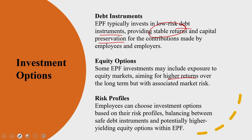Employees can choose investment options based on their risk profiles, balancing between safe debt instruments and potentially higher-yielding equity options within the EPF. These include debt instruments in the form of FDs, government bonds, and debentures, or equity options which may be individual stocks, mutual funds, or even ETFs — exchange traded funds — that track a specific index or sector, providing a diversified portfolio with potentially lower fees compared to actively managed individual mutual funds.